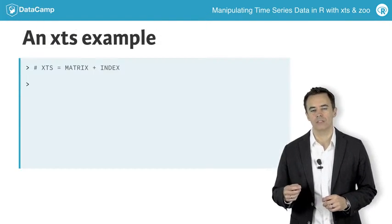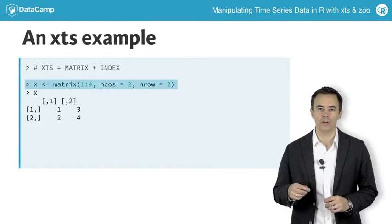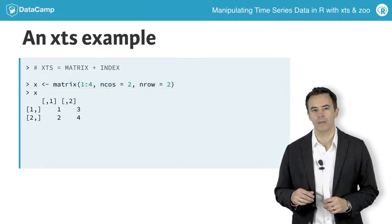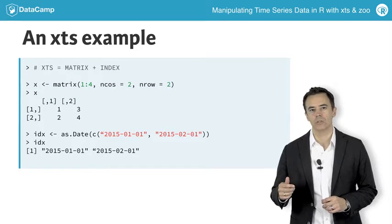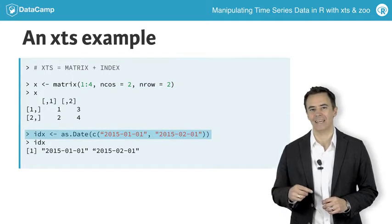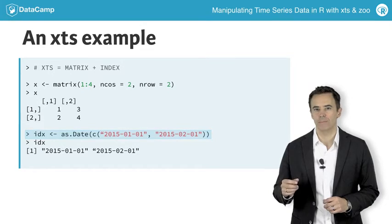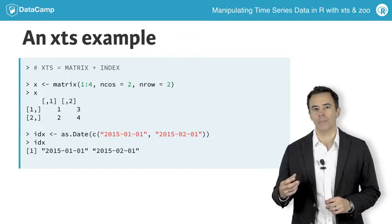To illustrate, we'll create a simple matrix called X. Each row of our data is an observation in time. To track these observations, we have dates in an object called IDX. Note that this index must be a true time object, not a string or number that looks like time.